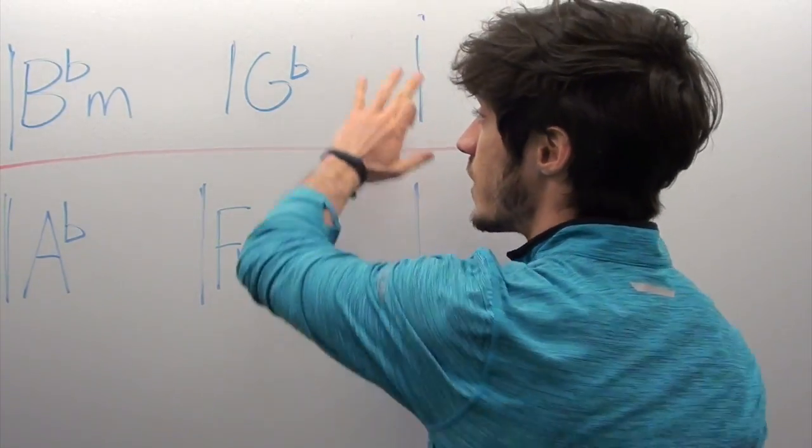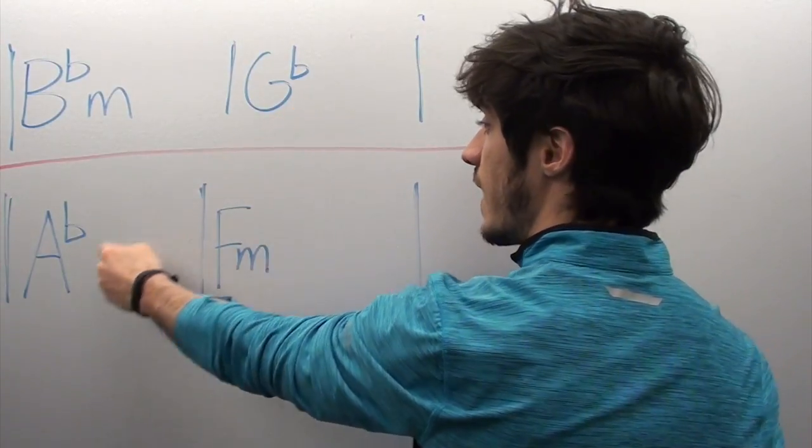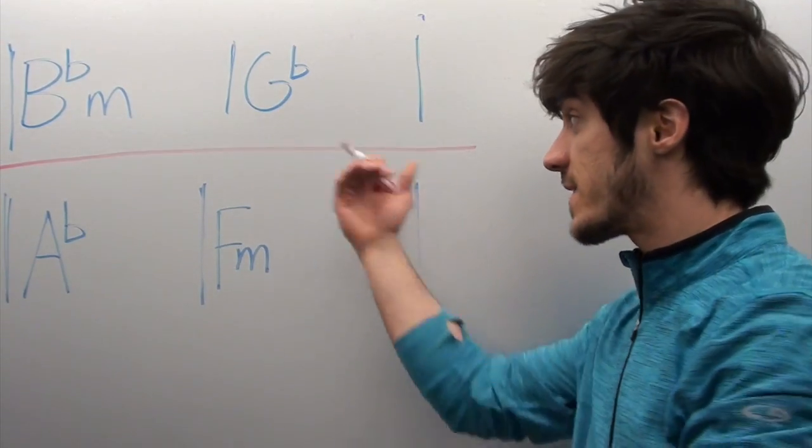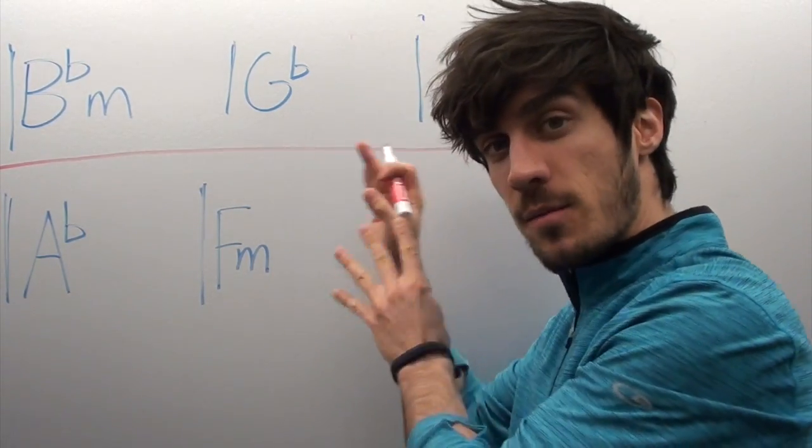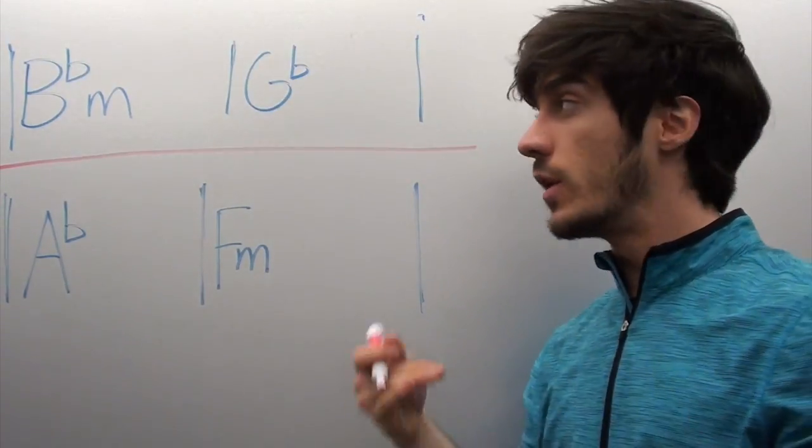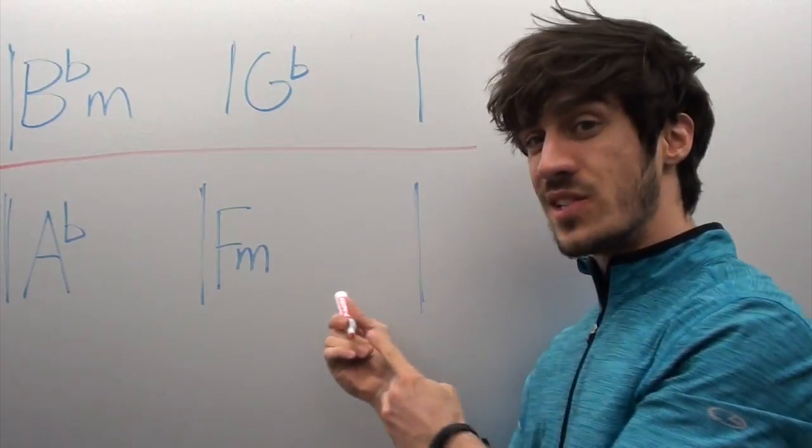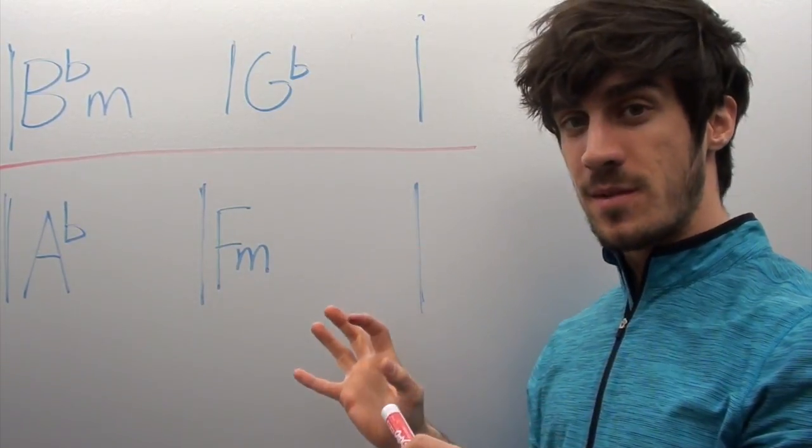When she gets to the chorus, she doesn't use this same progression over again. She goes G flat, A flat, F minor, G flat, which is different. That's how she keeps this chord progression fresh, even though she's using the exact same chords. Now let's say you really like this progression. You want to use it in your own music, but you don't want to use these exact ones because you feel like you're ripping Sia off. How do we do something similar? We move this progression into another key.